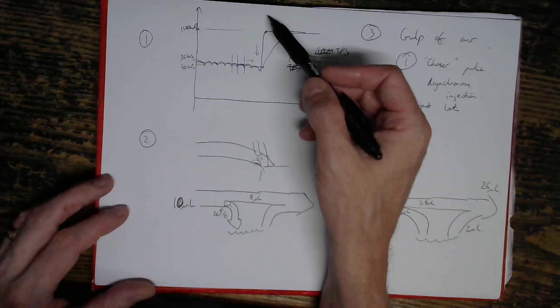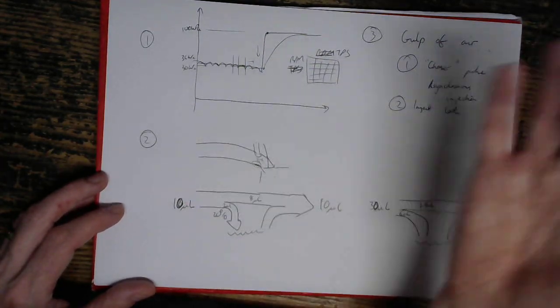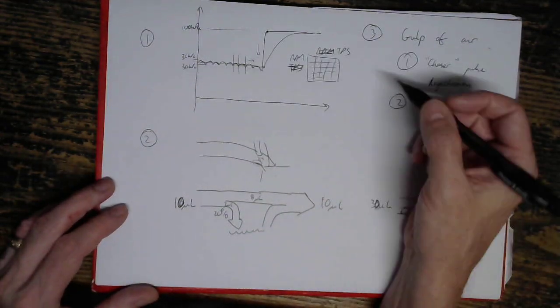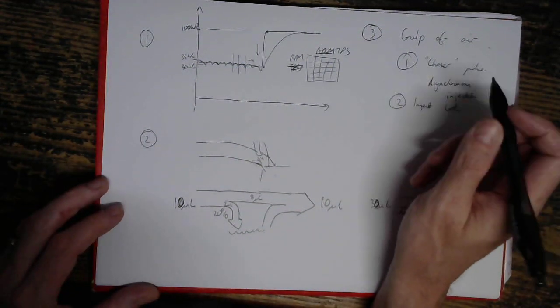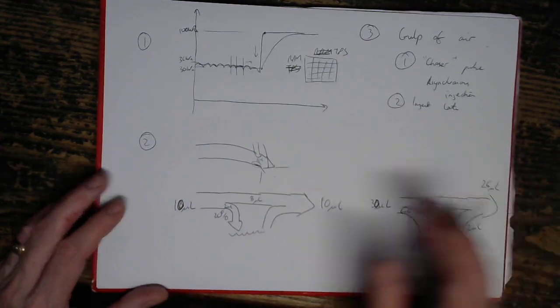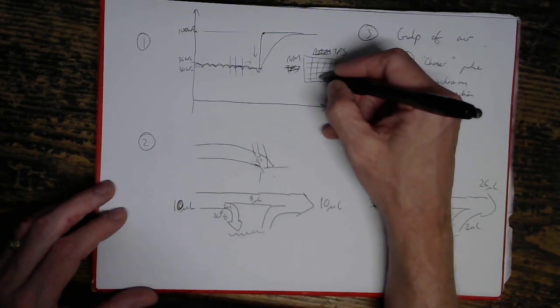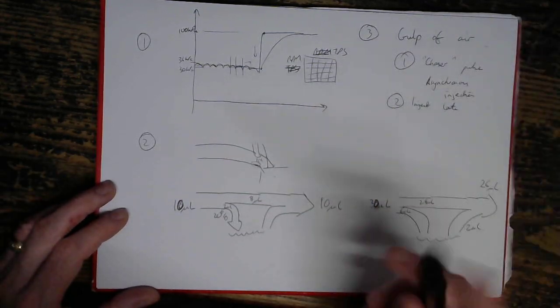which means if you're already on boost and snap open the throttle further, then you don't get a lower value, you actually get the value straight from the map sensor. And it also scales in between the two, so you don't get a big transition when you go over the threshold. So that's how we deal with that one.